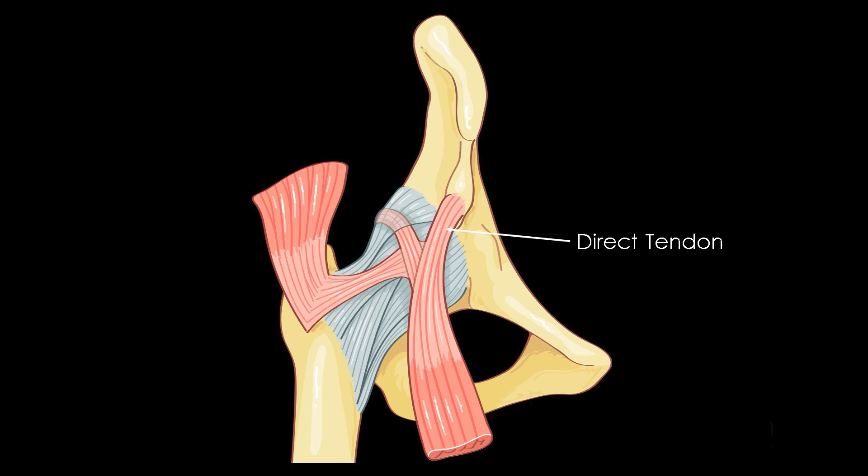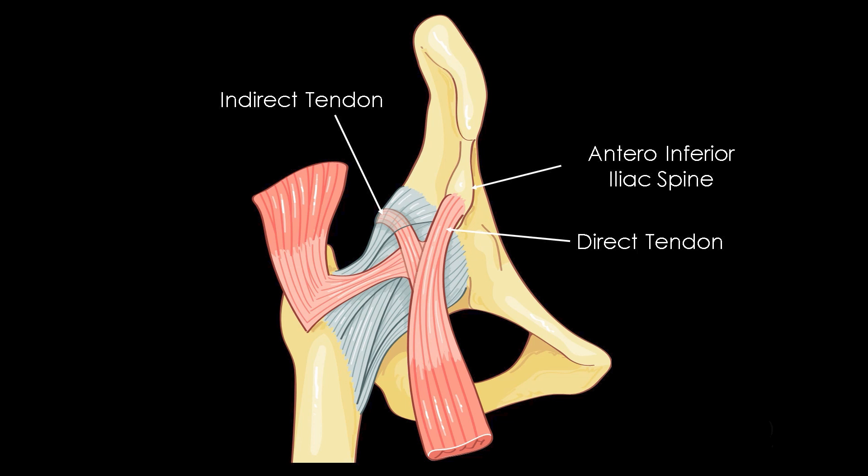The direct tendon, short and bulky, inserts on the anterior inferior iliac spine. The indirect or reflected tendon, longer and thinner, inserts on the lateral side of the acetabular labrum. These two tendons meet at approximately 2 cm below the anterior inferior iliac spine to form the conjoined tendon.